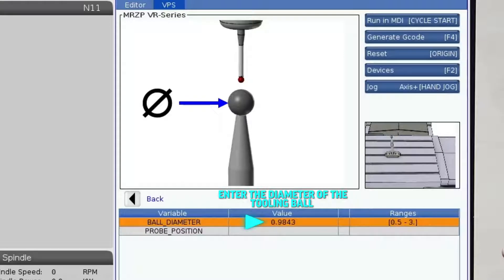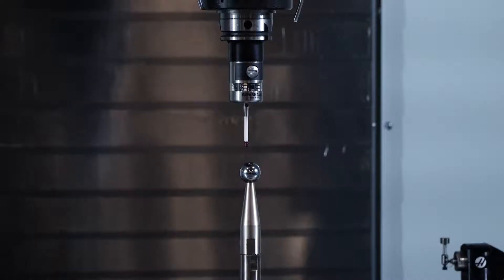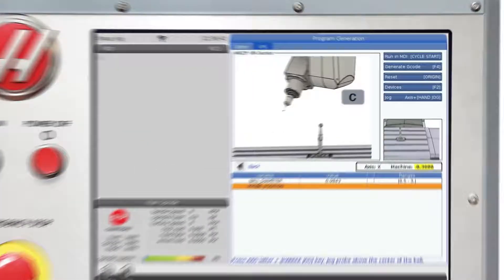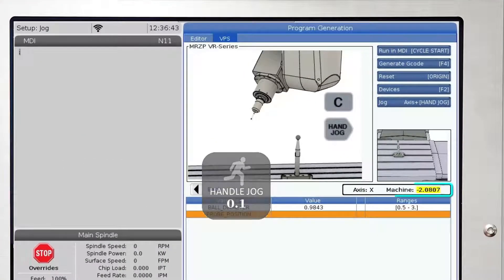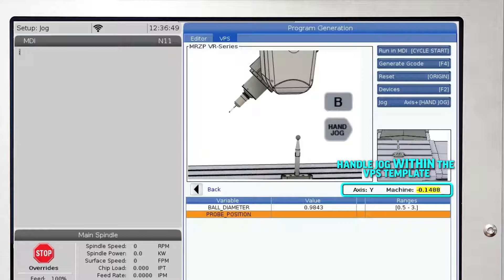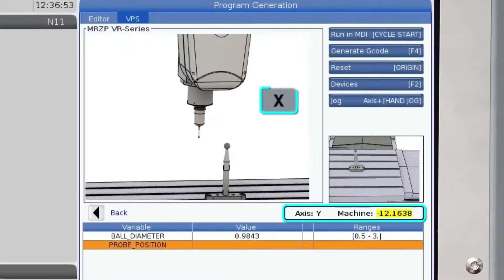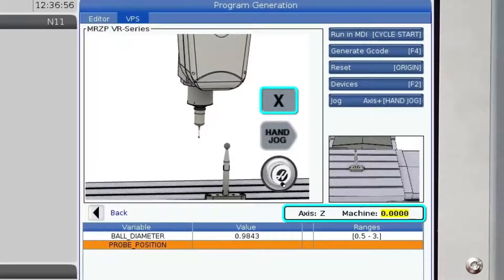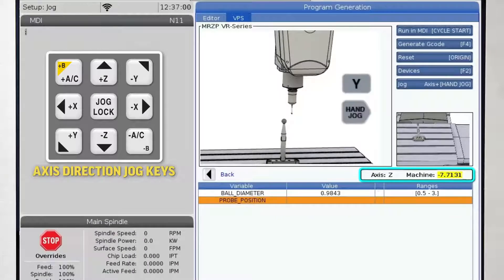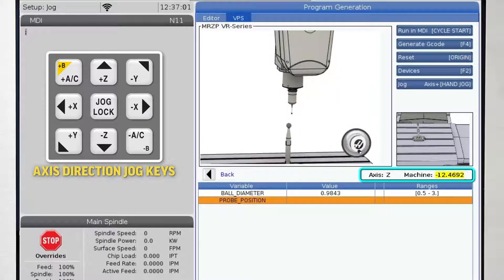All we need to do here is enter the diameter of the tooling ball and then jog the spindle probe to the start position. Please notice that when I press the keys displayed in the jogging animation, I enter jog mode without leaving the VPS template. All VPS templates work this way. Press the letter key of the axis you want to jog first, then press handle jog. Once in jog mode while in the template, you can change the axis to jog by pressing an axis direction jog key or the letter key and handle jog again.